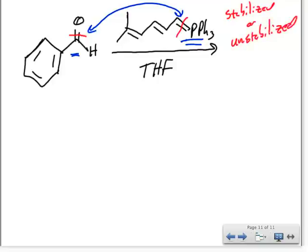If it is stabilized, then we're going to get a trans-type system or an E-type system. If it is unstabilized, then we're going to get a cis system or a Z system. If we look here, of course, we've got the conjugated pi system, so if I have a negative, I can delocalize that, so that means this one is a stabilized system.